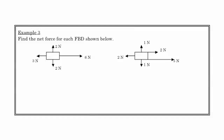So here's a couple different free-body diagrams. And we've got some forces in the vertical direction, and some in the horizontal direction. So for the first one, let's look at the sum of the forces in the Y direction. We have 2 Newtons up, 2 Newtons down. So those are going to cancel out, and we just get 0 Newtons in that direction.